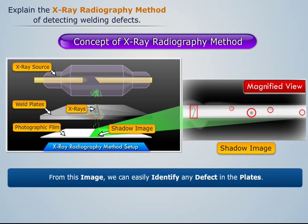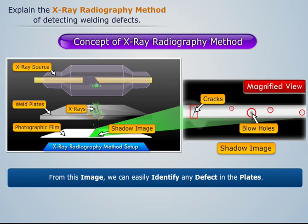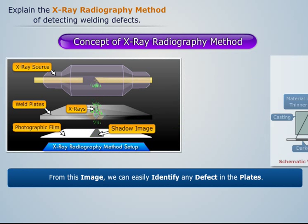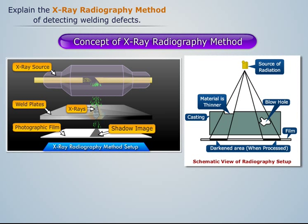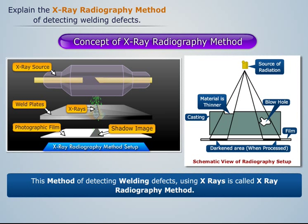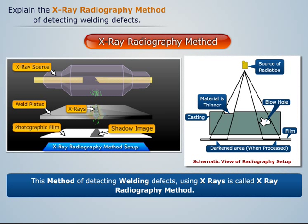From this image, we can easily identify any defect in the plates. Similarly, from this method, we can detect any defect in casting. This method of detecting welding defects using X-rays is called the X-ray radiography method.